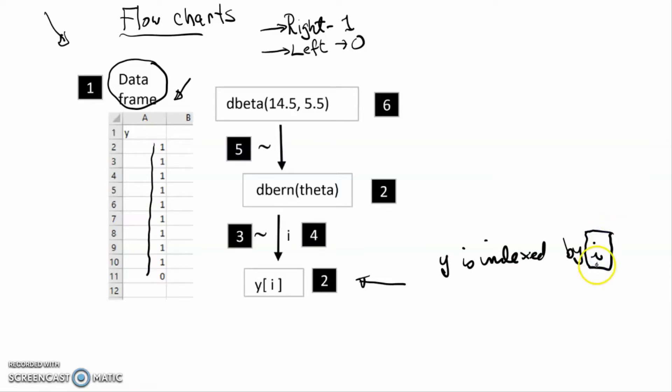The definition of i is implicit and is determined by the position, in this case, the row number in the data frame.